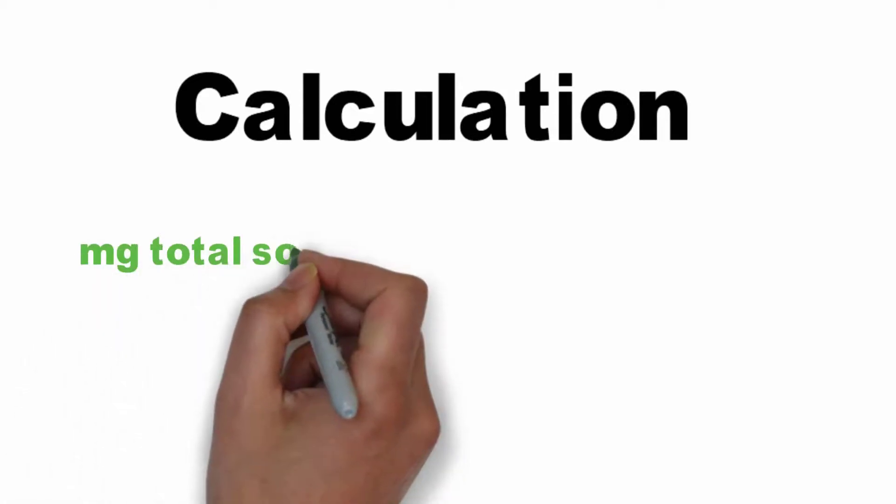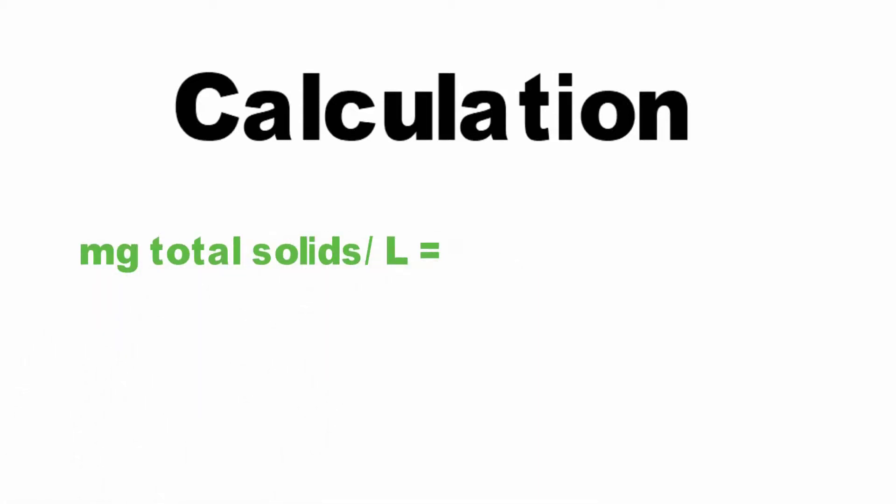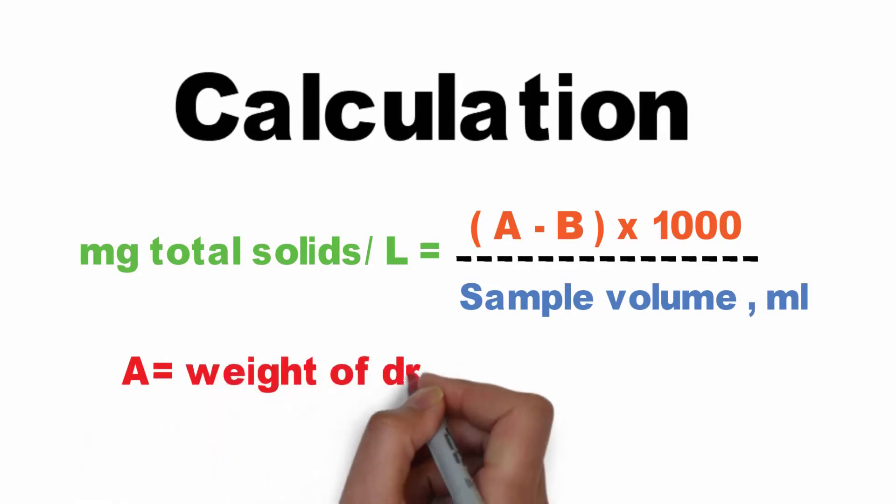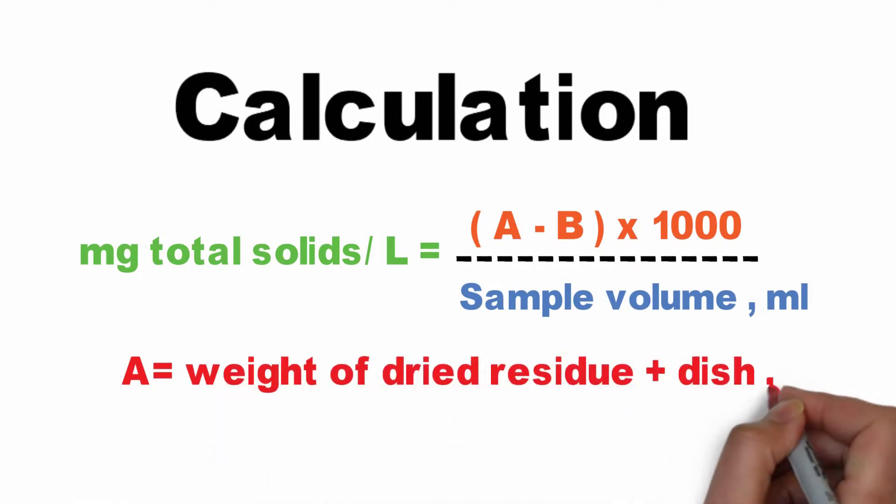Now to the calculation: Milligrams of total solids per liter equals (A minus B) times 1000 divided by the sample volume in milliliters. A is the weight of dried residue plus the dish in milligrams. B is the weight of the dish alone in milligrams.